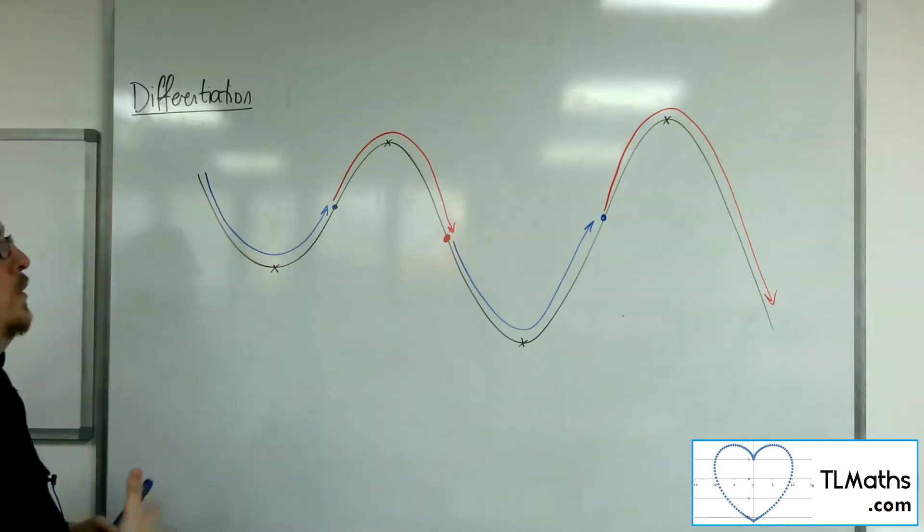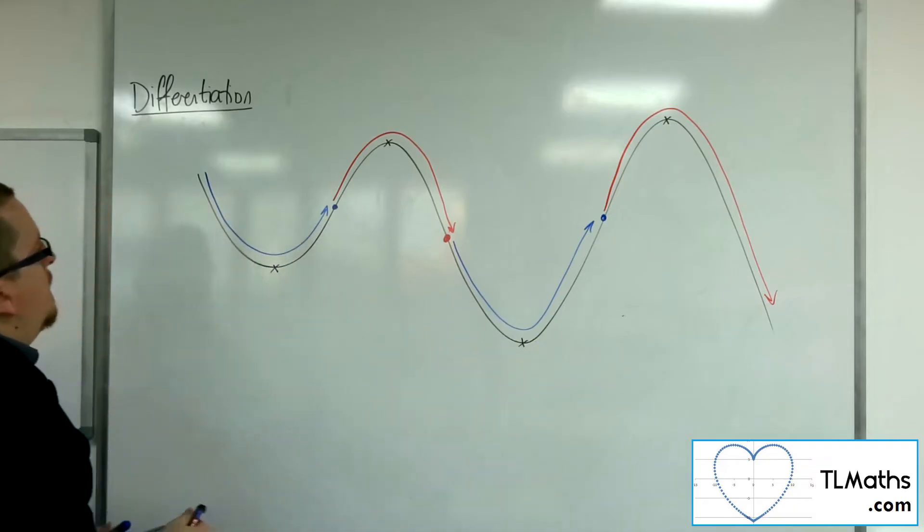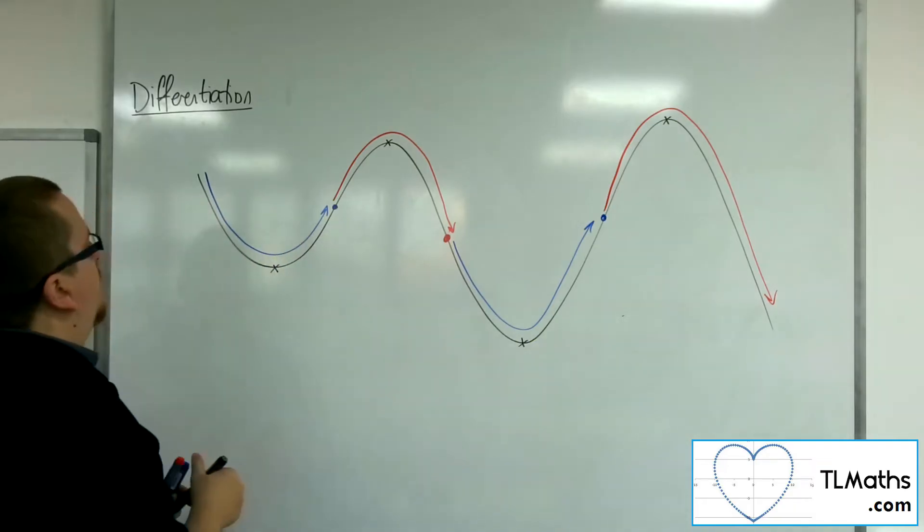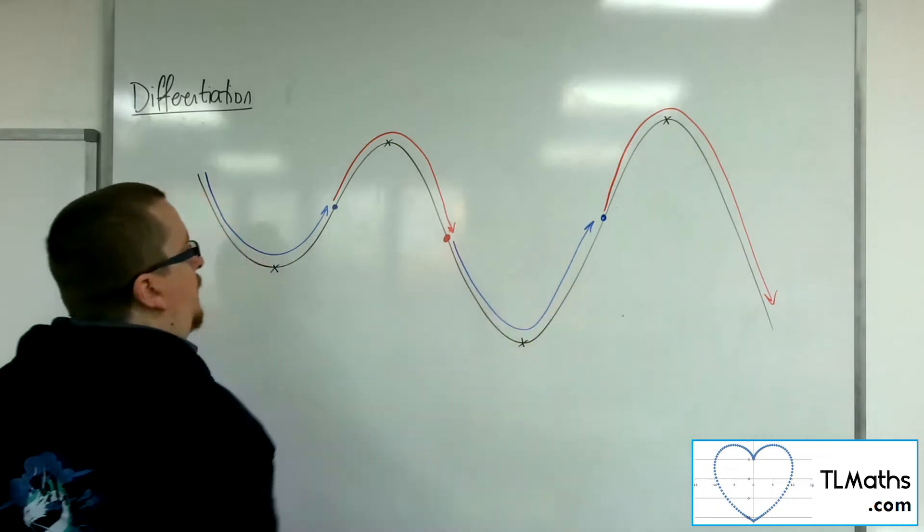Now, first of all, what are these regions called? Now, if you're looking at a curve that is like this, one of these blue ones.